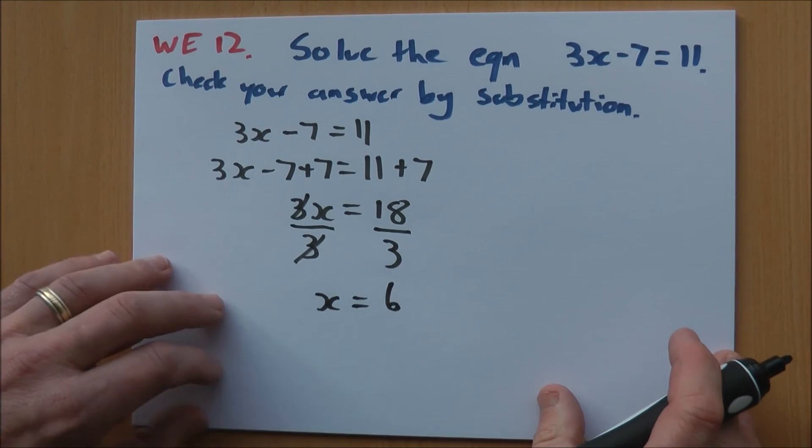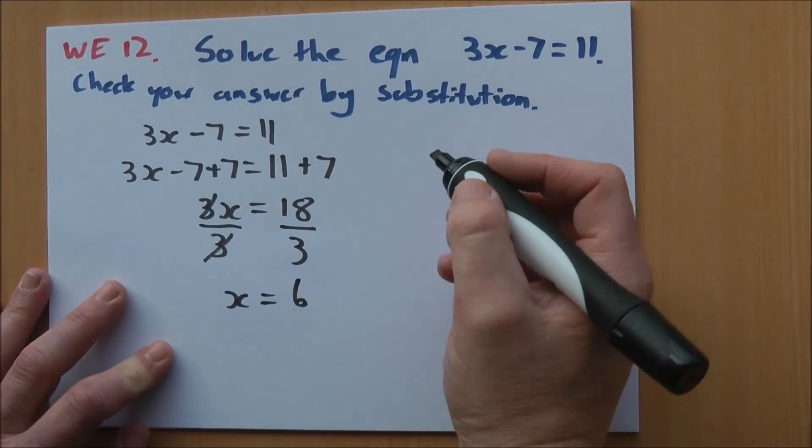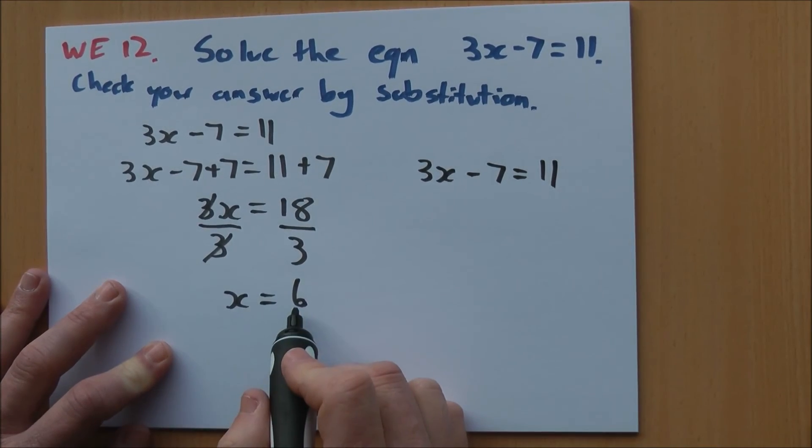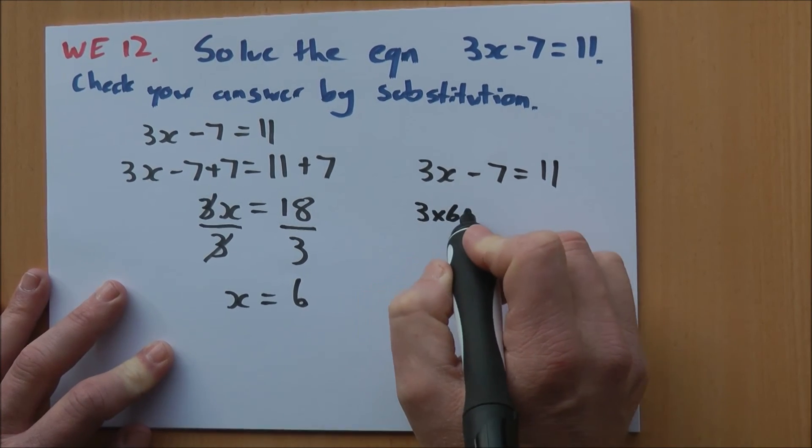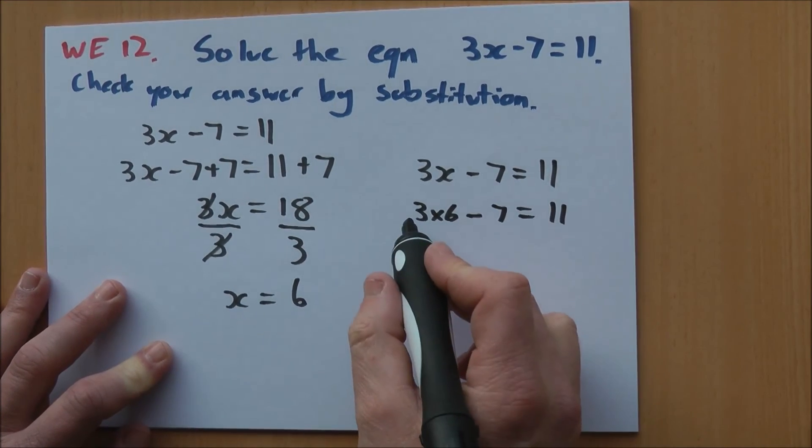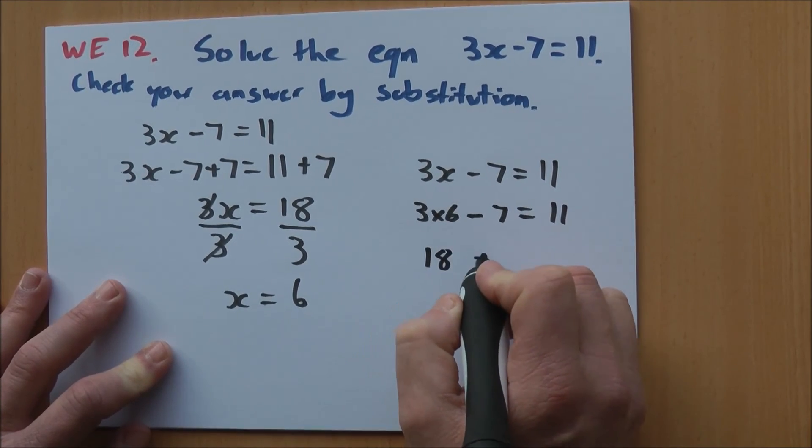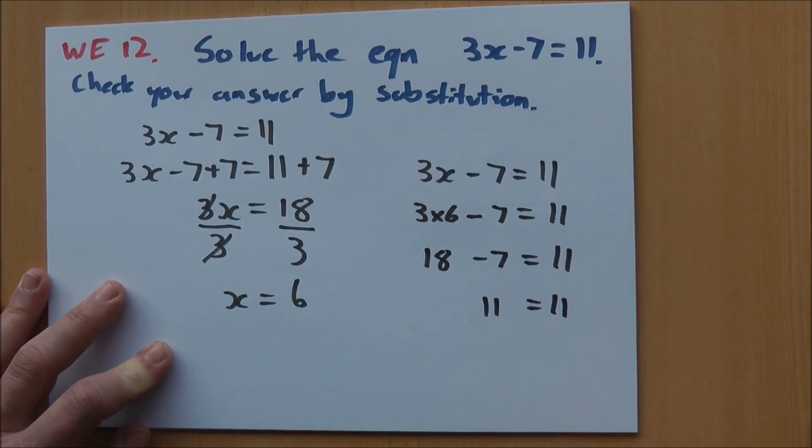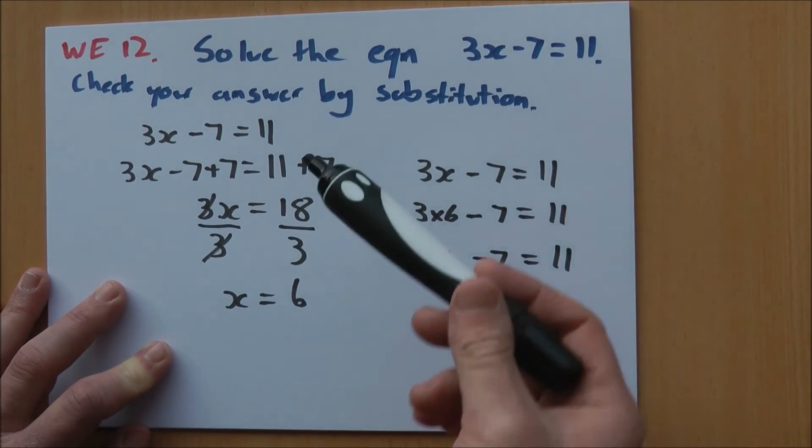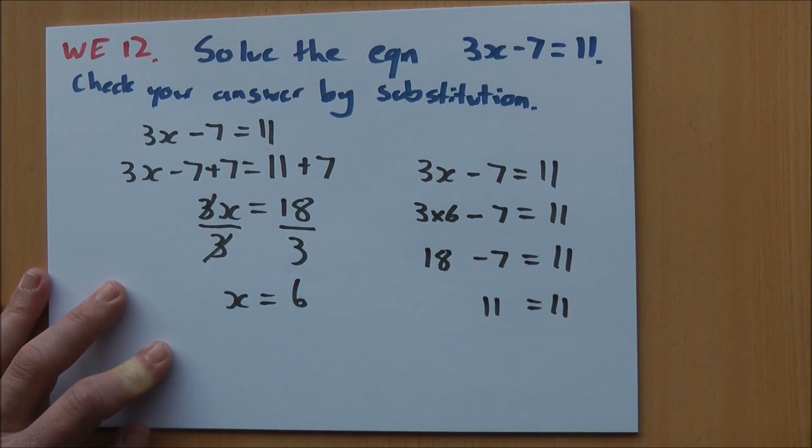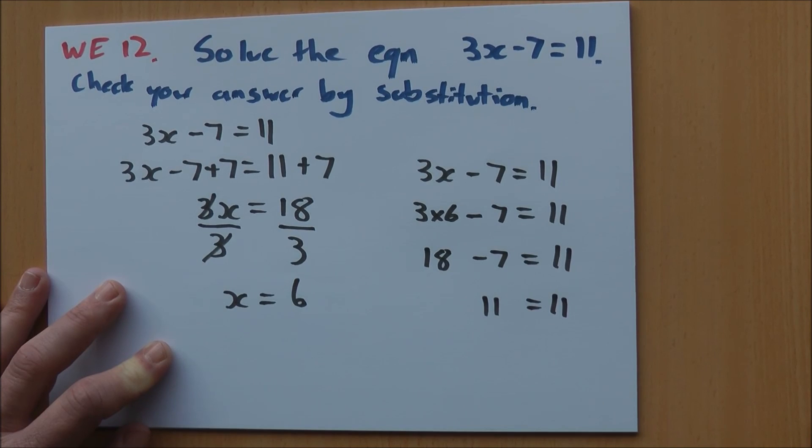Now we need to check using substitution. So I've got 3x minus 7 equals 11. I'm going to put a 6 in for my x. 3 times 6 minus 7 equals 11. And we work it out from there using our normal order convention. 3 times 6 is 18. 18 minus 7 equals 11. You can see we've got the right answer, therefore we're correct. And that's how we do it. Notice the setting out I've got. This is the first part of the question over here where I do my backtracking, and that's how it should start to be set out. And over here is where I do my substitution to check I had the right answer.